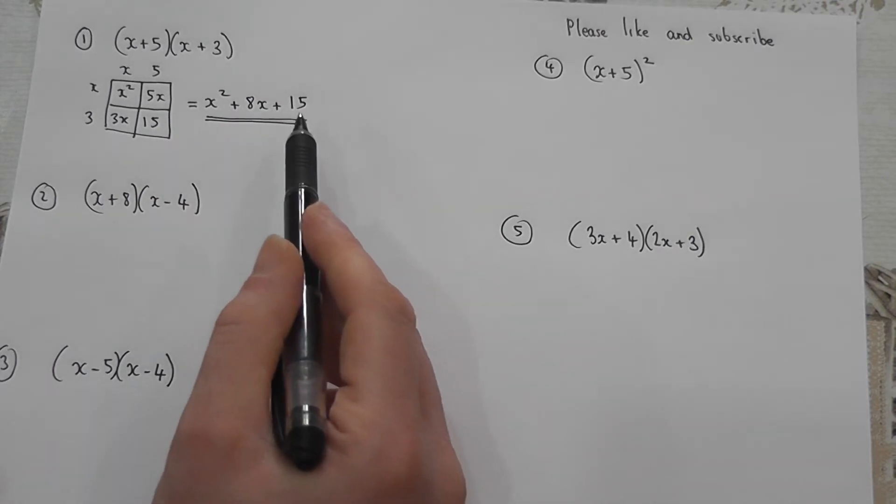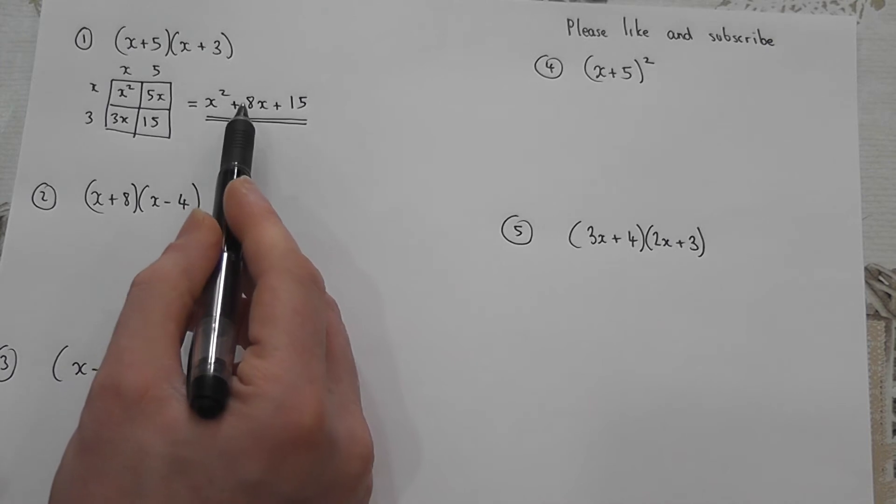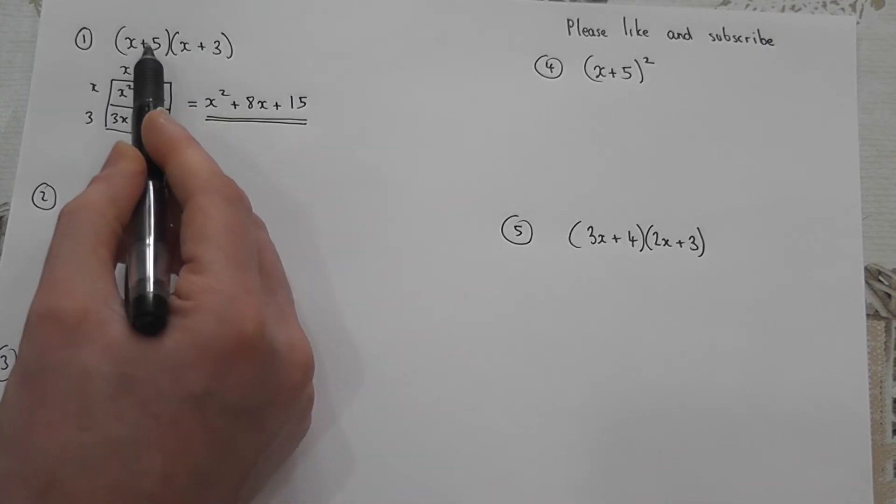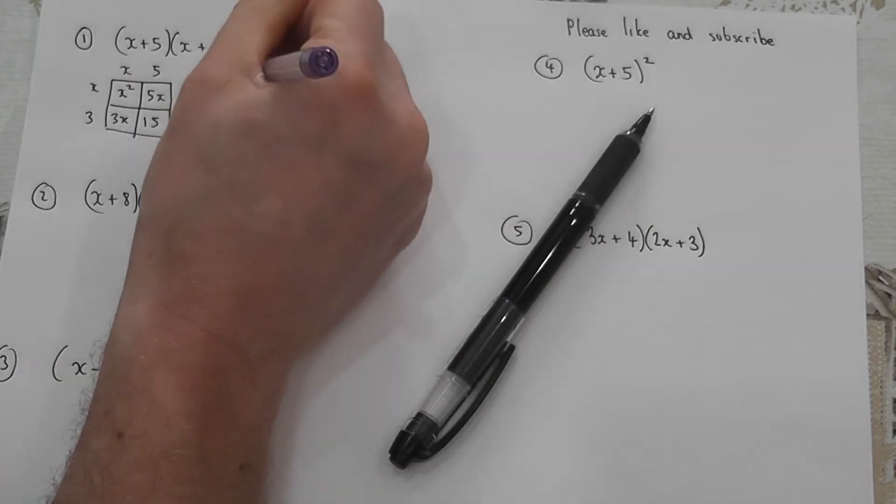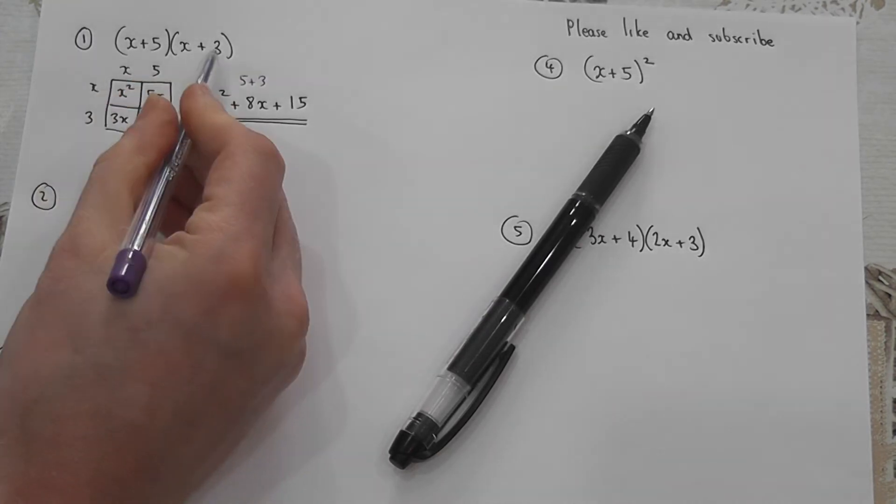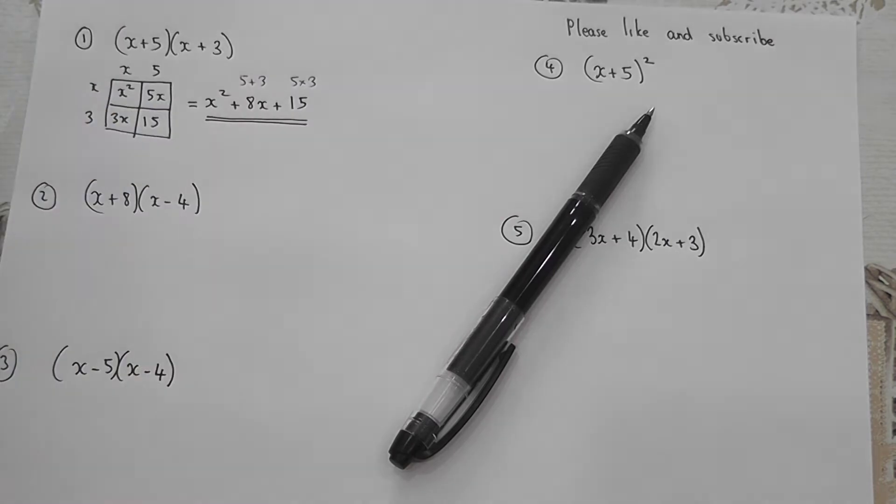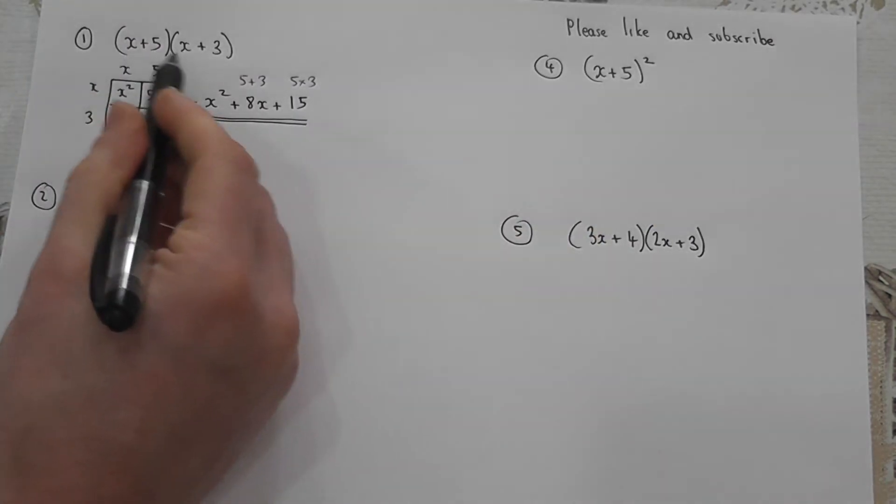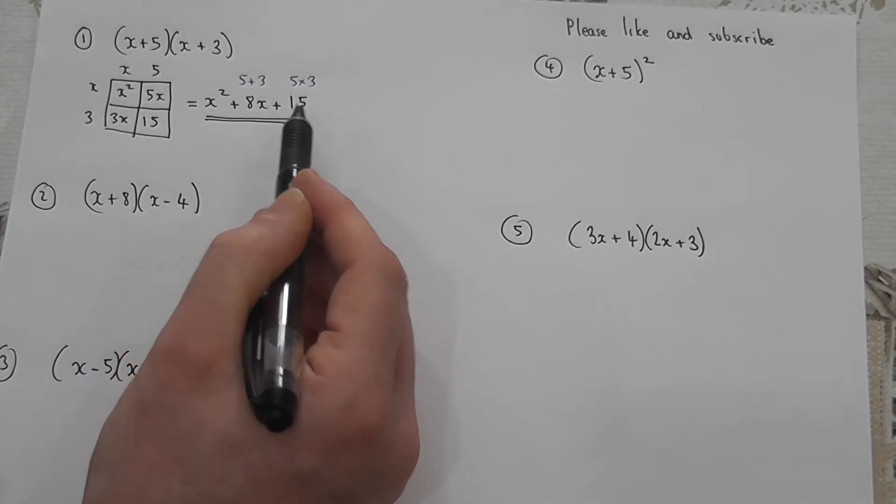Now the trick if you like or the golden rule if you want a shortcut is the middle number in this case is just 5 plus 3 which is 8. So again if you want a little shortcut 5 plus 3 is 8 and 5 times 3 is 15. So when there's just an x in the brackets the shortcut is you add to get the middle term and you multiply to get the third term.